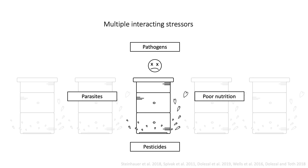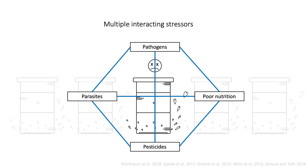We note that these stressors are complex and mutually reinforcing. We explain, for example, that a malnourished colony is more susceptible to parasites and pathogens, and that a diseased colony is less likely to be able to collect the resources it needs for adequate nutrition.